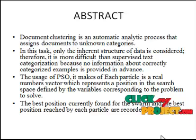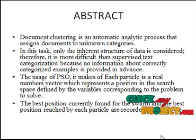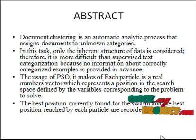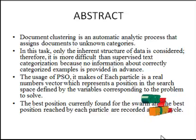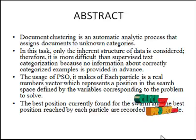The usage of particle swarm optimization means each particle is a real numbers vector, which represents the position in the search space defined by variables corresponding to the problem to solve. The best position currently found for the swarm and the best position reached by each particle are recorded at each cycle.